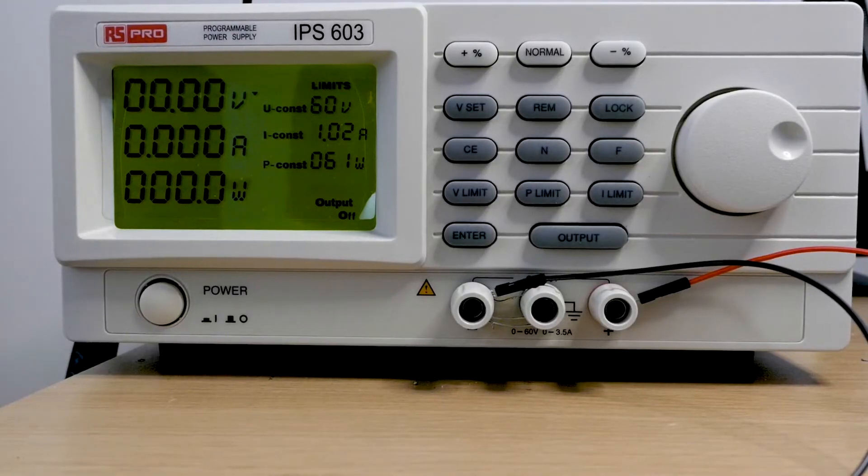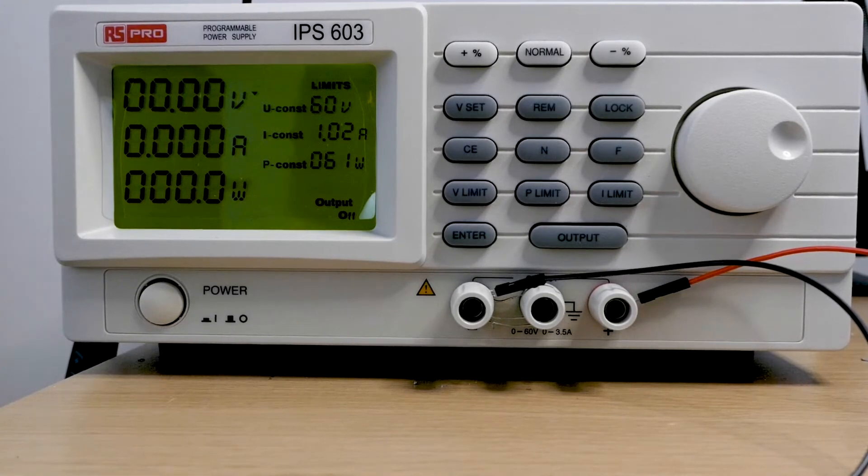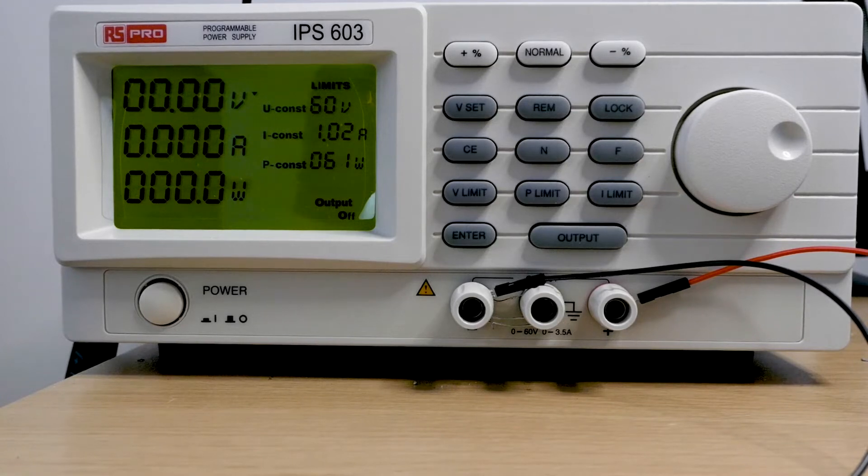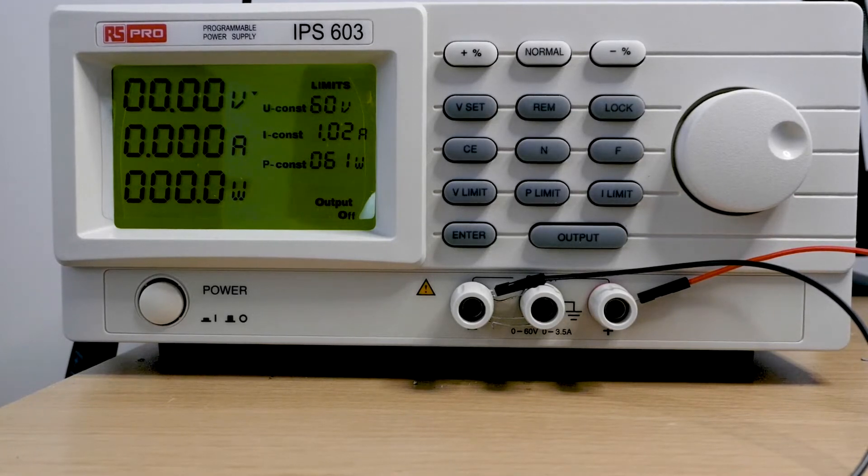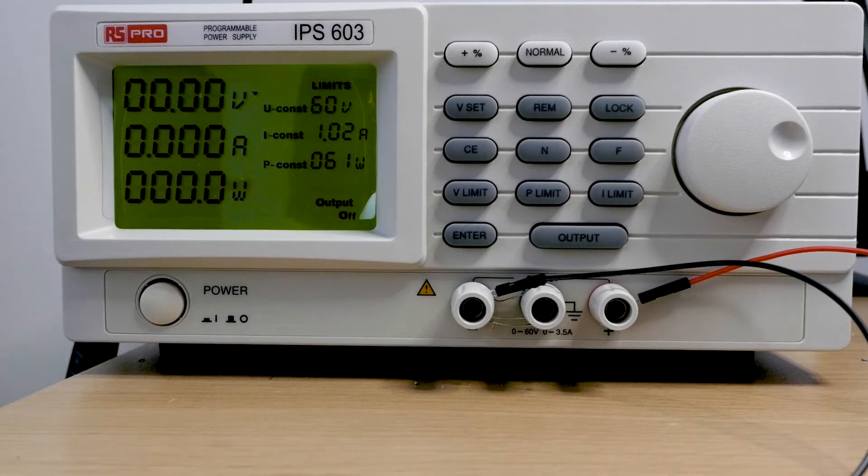The first piece of equipment we're going to look at is a DC power supply. You can imagine this is like a battery, it's a voltage source but it's variable. We can set the voltage. This particular unit goes up to 60 volts and it can provide up to three and a half amps I think.